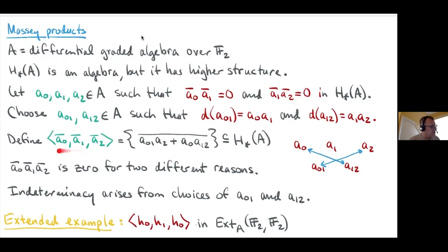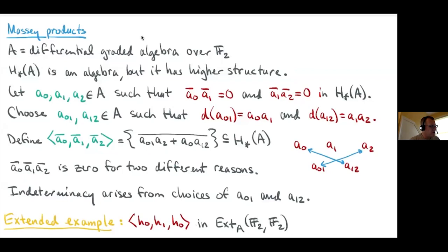One way to think about what the Massey product measures: the triple product a_0·a_1·a_2 is zero for two different reasons — because the first two elements multiply to zero, and also because the last two multiply to zero. These two different reasons correspond to the two terms in the formula. This is a common theme in homotopy theory: when something is zero for two different reasons, you assemble them and get a higher-order invariant.